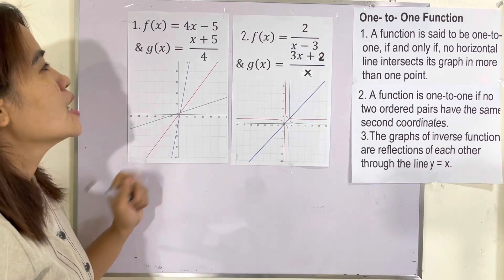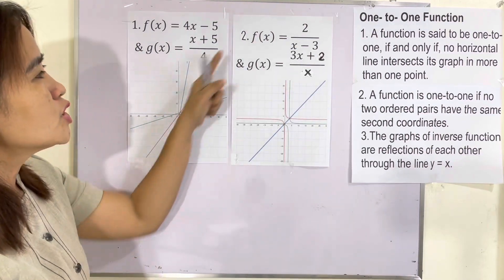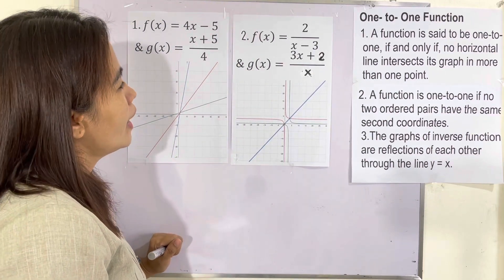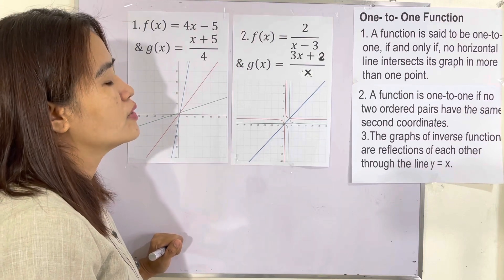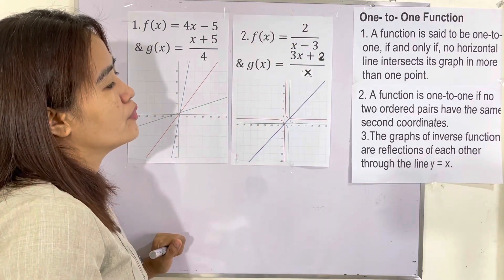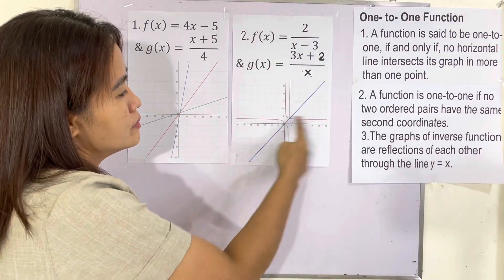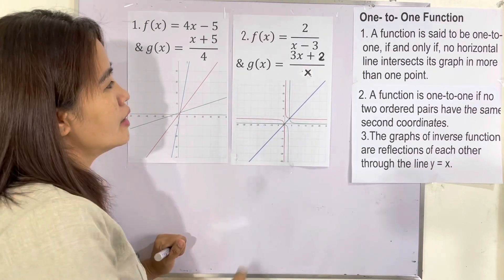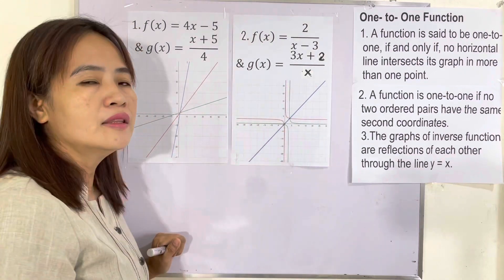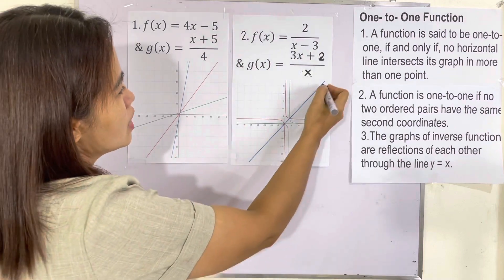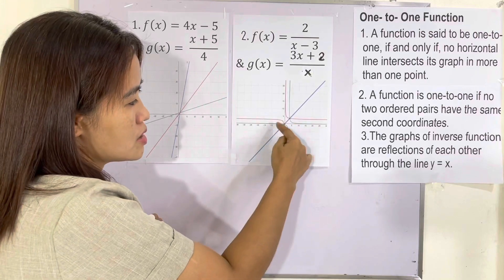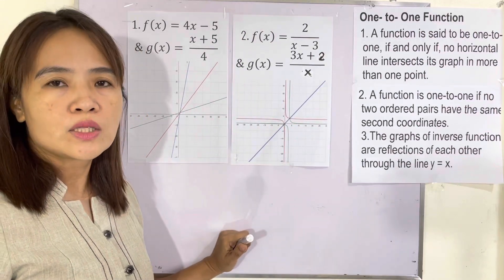Therefore this one is a one-to-one function. Number two: f(x) = 2/(x − 3) and g(x) = (3x + 2)/x. The graph of 2/(x − 3) is the red one and (3x + 2)/x is the green one — they are in a pair. The line y = x shows they are also reflections of each other, so this is also a one-to-one function.